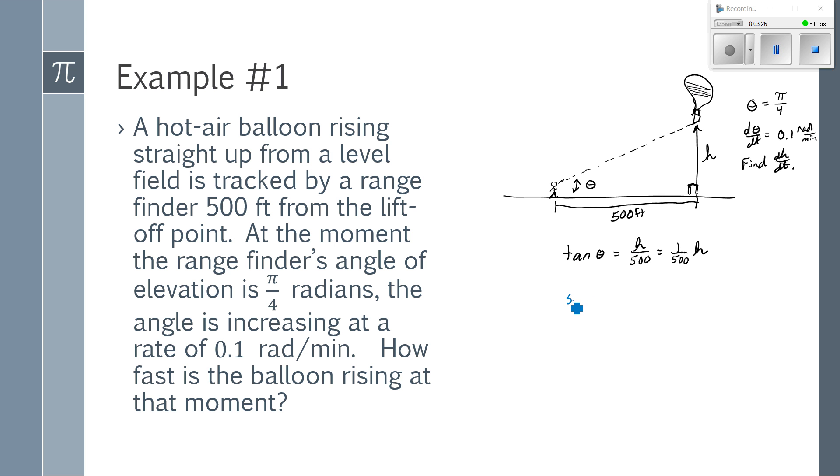So the derivative of tangent is secant squared. Inside doesn't change, but the inside is a function because that's not t. So I need times dθ/dt equals 1 over 500 is a constant multiple. The derivative of h is 1, but that's not a t, so I need a dh/dt.